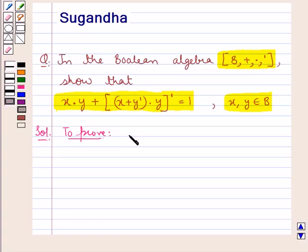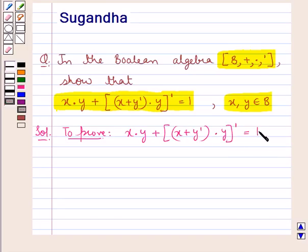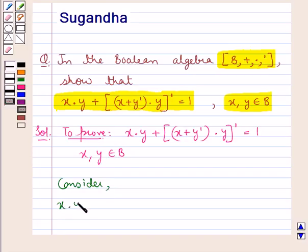We are supposed to prove x·y + (x + y')·y)' is equal to 1, where x and y are elements of the set B. So we consider the expression x·y + (x + y')·y)'.